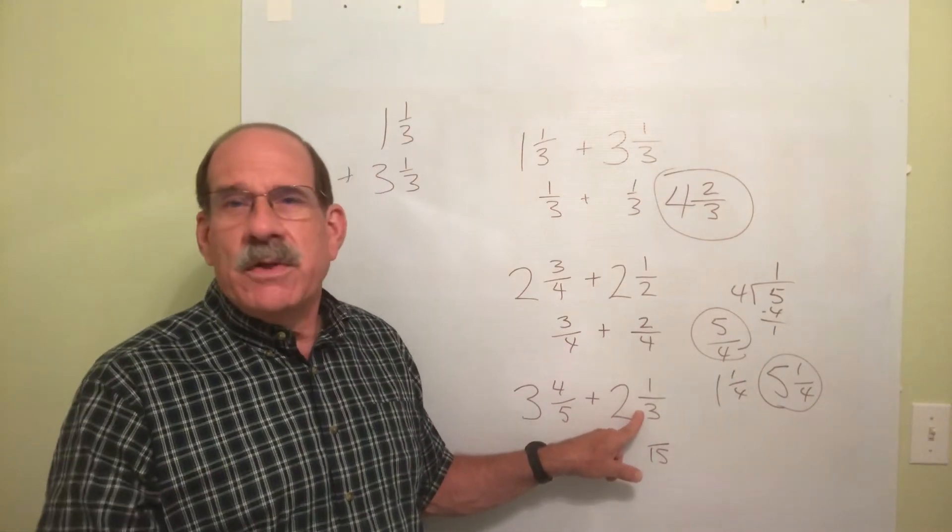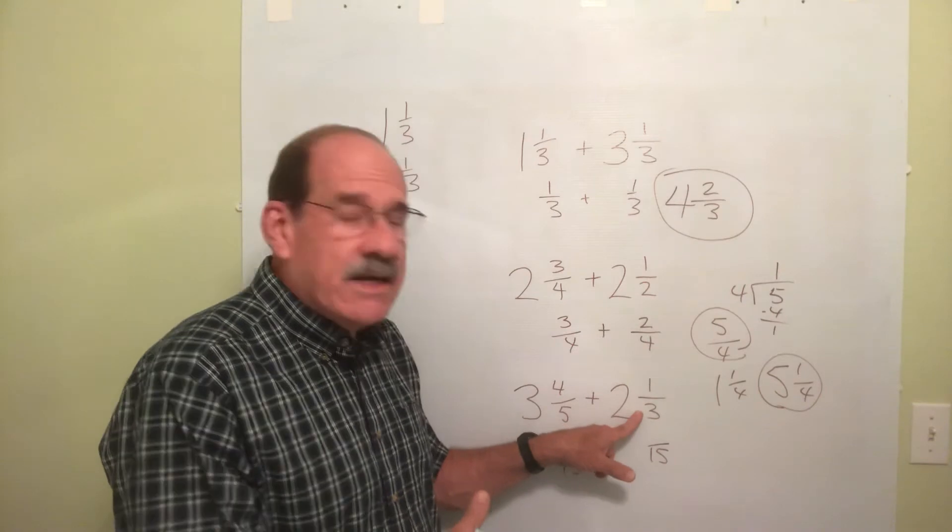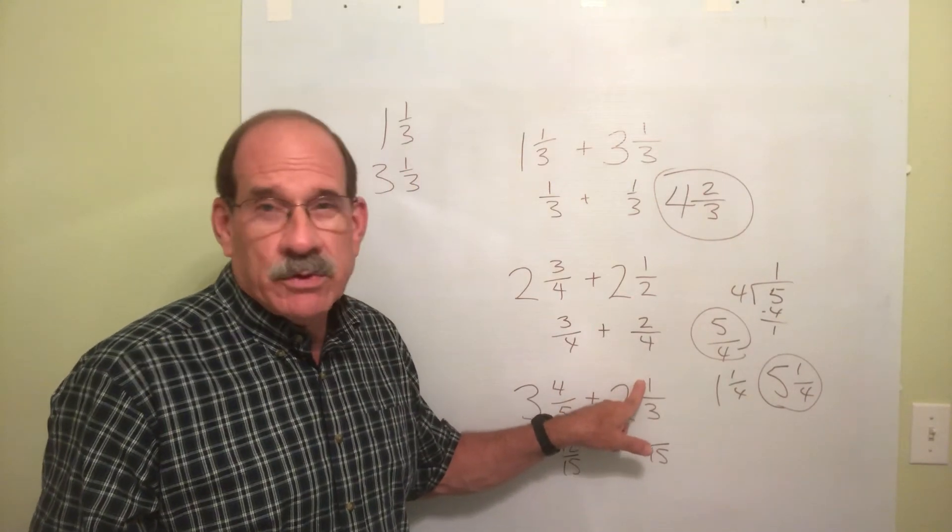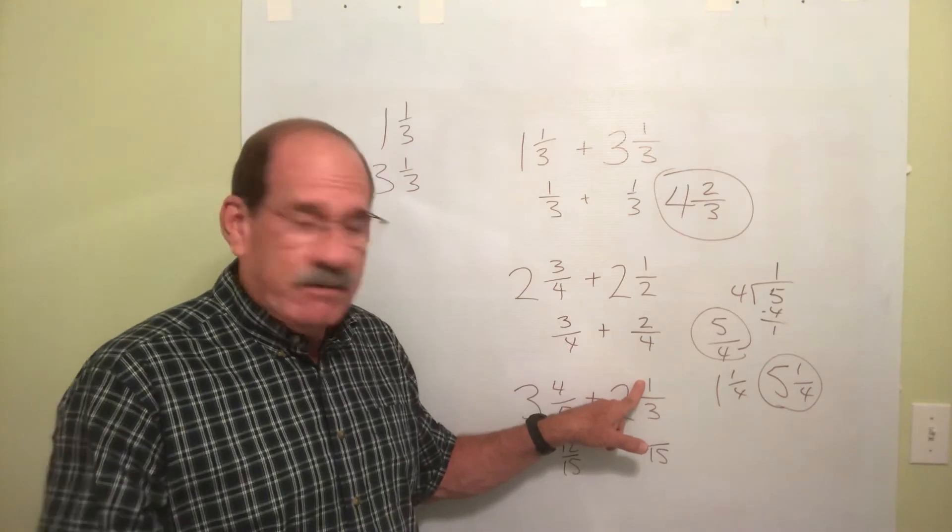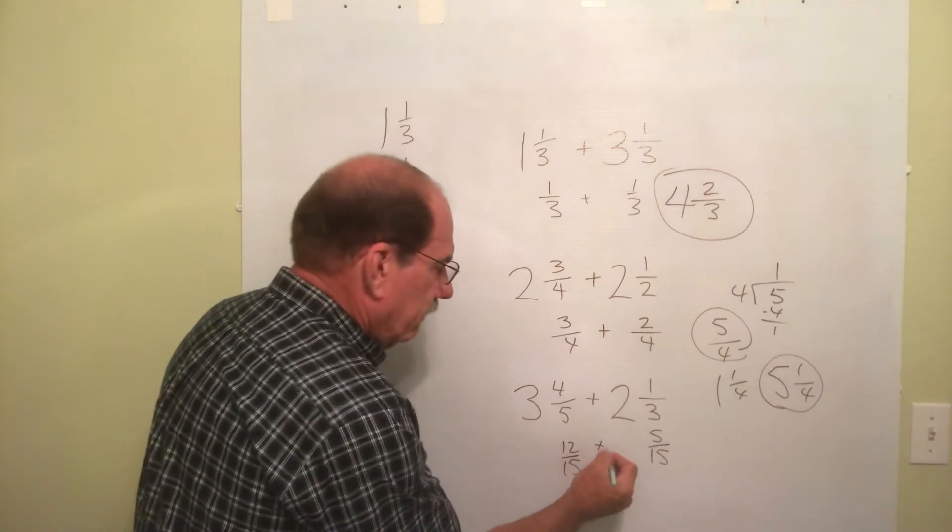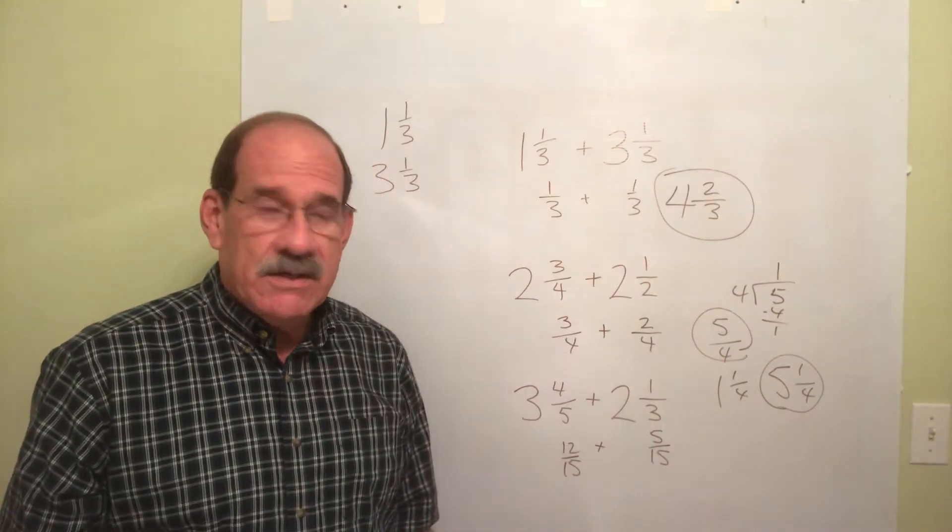This one. What do you do to the 3 to make him into a 15? Well, multiply by 5. Top number, do the same thing. He demands equal treatment. Multiply him by 5 also. This becomes 5. So now I have 12 fifteenths plus 5 fifteenths.